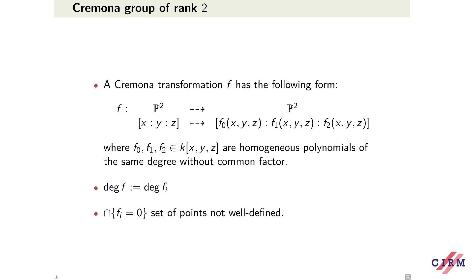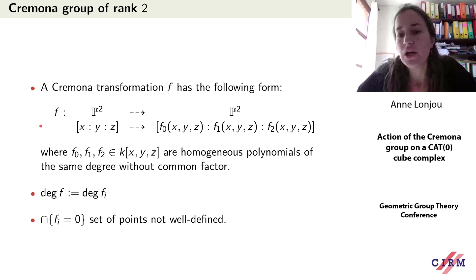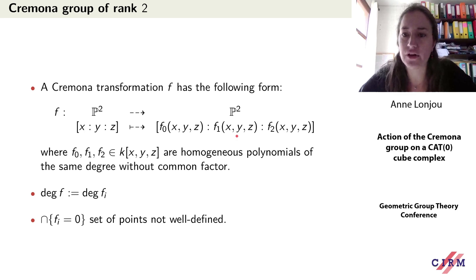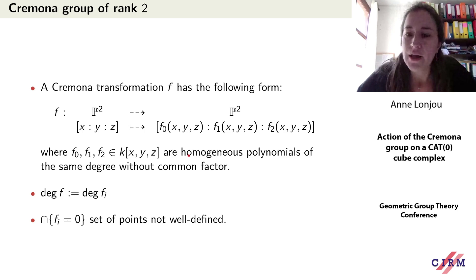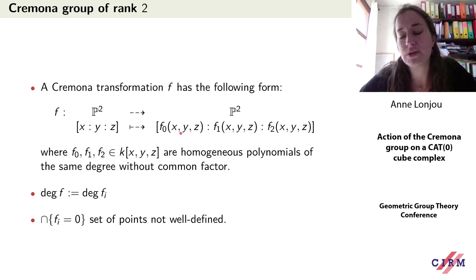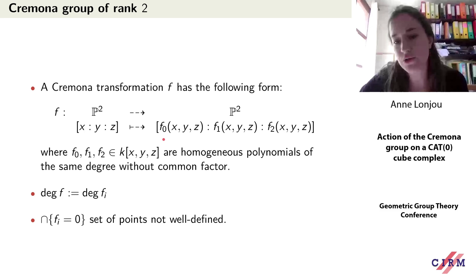For those seeing this group for the first time: a birational transformation can be written explicitly from the projective plane. To [x:y:z] you associate three homogeneous polynomials of the same degree and without common factor — this is a rational map. For it to be birational you need an inverse of the same form. The polynomials are homogeneous and of the same degree so the map is well-defined on P2, and without common factors so the degree is well-defined and equals the degree of the fi.